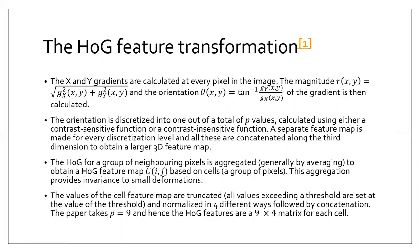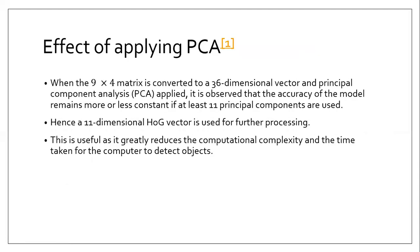This 9 × 4 HOG feature matrix is obtained per pixel and fed for further processing, upon which the root filter and part filters are convolved. It has also been observed that when this 9 × 4 matrix is converted to a 36-dimensional vector and Principal Component Analysis (PCA) is applied, we can reduce it to an 11-dimensional vector using the 11 principal components while maintaining accuracy to a reasonable level. This greatly reduces storage space and computational complexity while retaining most information, and it significantly reduces the time taken for the computer to detect objects.